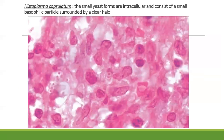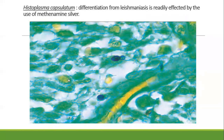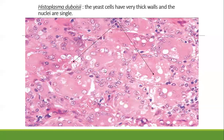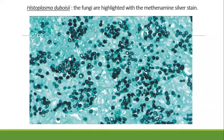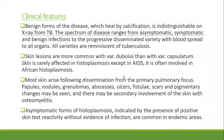On histopathological examination, the small yeast forms are intracellular and consist of small basophilic particles surrounded by a clear halo. They are differentiated from Leishmania by use of methenamine silver or PAS staining. The yeast cells have very thick walls and nuclei, usually single, seen within giant cells and histiocytes. Methenamine silver highlights this parasite.